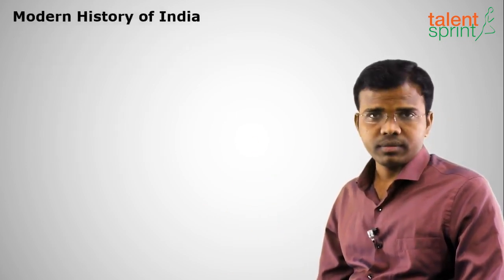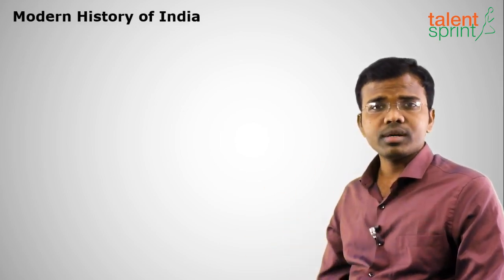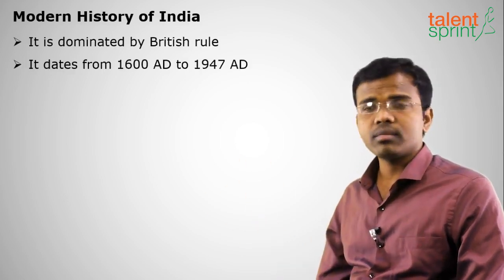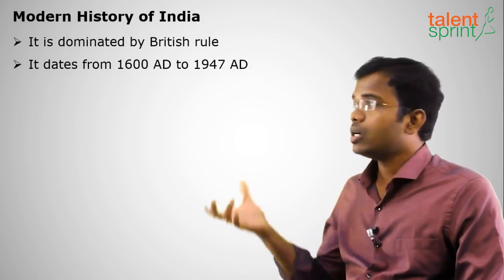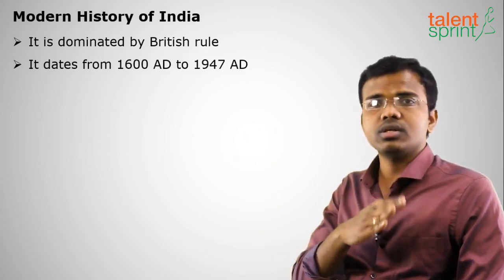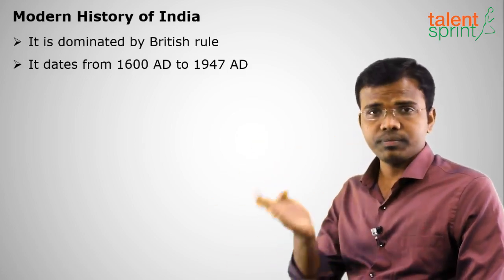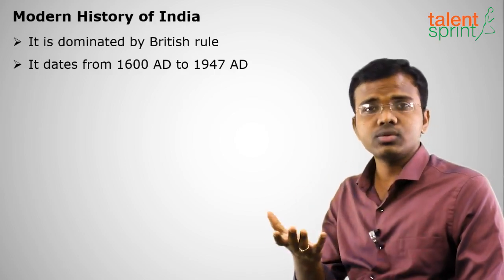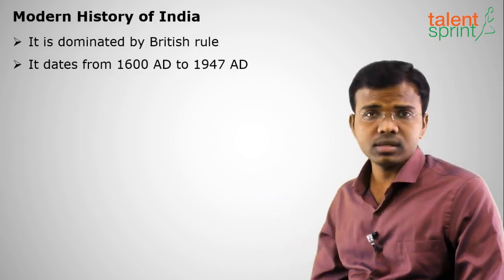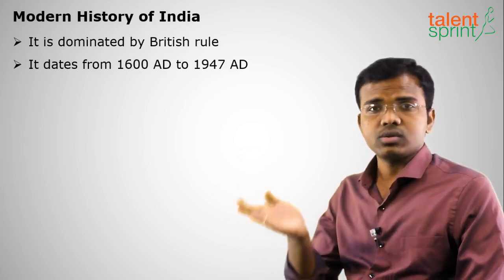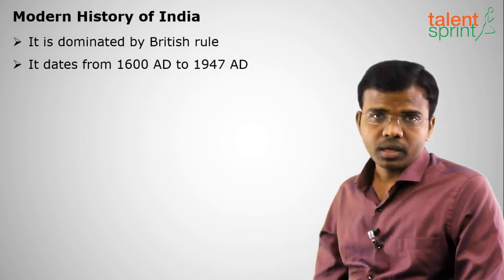Next is modern history. Ancient history is dominated by Hindu rulers, medieval history by Muslim rulers, and modern history by British rulers. This is James Mill's basic classification. Modern history dates from 1600 AD to 15th August 1947, when India attained independence.